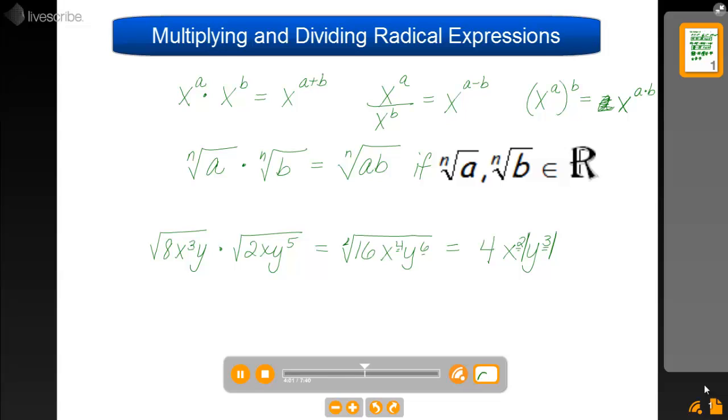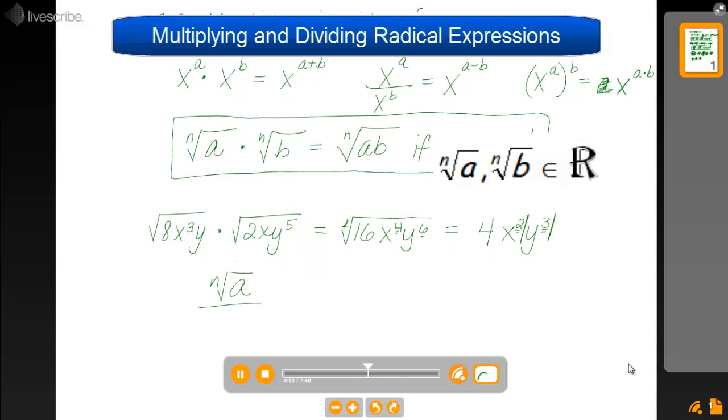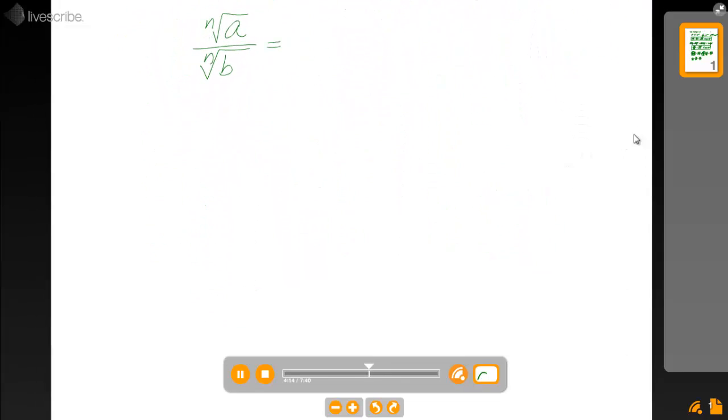So that was a nice example of this multiplication rule of radicals. And let me just write down the division rule. If I have the nth root of a divided by the nth root of b, I can combine that into one radical, which would be the nth root of a over b. But again, this is only okay if the nth root of a and the nth root of b are real numbers.